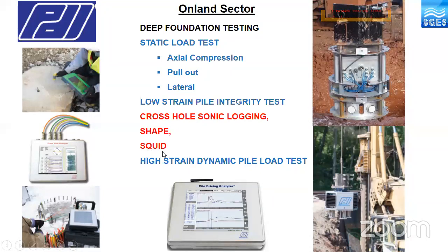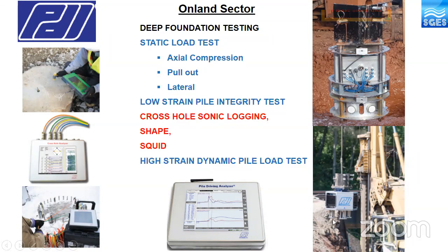SQUID is a Shaft Quality Identification Device. It goes directly into the kelly bar with three penetrometers and three retractable plates. As it is lowered into the borehole, forces from contaminated muck at the bottom are read by the penetrometers, and the retractable plates move up — telling you the thickness of contamination at the base of the borehole. This is very useful particularly for rock-socketed piles deriving most capacity from end bearing. US guidelines state that the average thickness of contamination cannot exceed two inches; if it does, you must clean the borehole before placing concrete — ensuring quality control for rock-socketed piles.